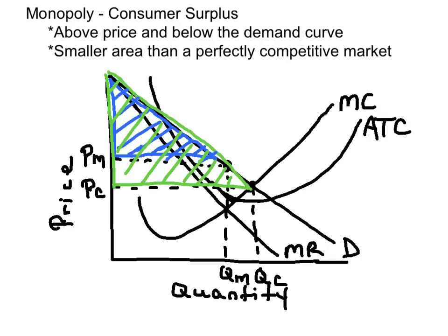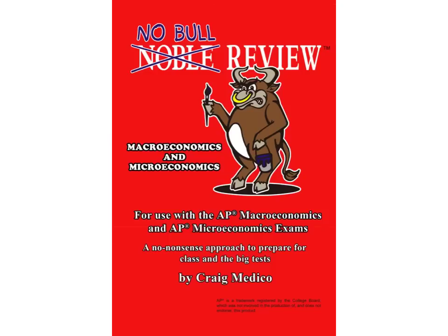You can see the differences here. The blue triangle represents the consumer surplus if it's a monopoly, and the green triangle represents the consumer surplus under a perfectly competitive market. That's how you identify consumer surplus under monopolistic conditions.